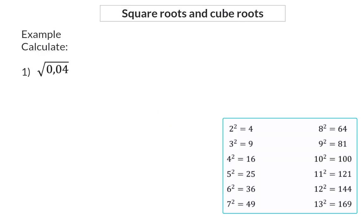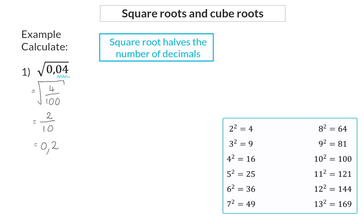When it comes to square and cube roots, I can once again decide to firstly rewrite as a common fraction, and this will be 4 hundredths. Now I can calculate the square root of 4 and that of 100 and rewrite this as a decimal fraction. Once again, I can see a shortcut. The original number of decimals when squaring will be halved in the answer.